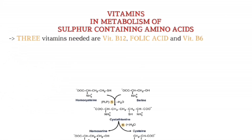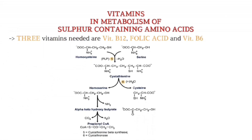The third vitamin, vitamin B6 (pyridoxine), is required for cysteine synthesis, as we have discussed earlier.